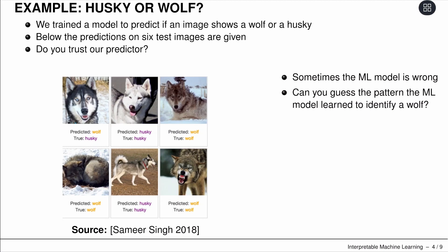Let's look at a concrete example: an image classifier predicting whether there's a wolf or a husky on an image. We see some examples — some correctly predicted as wolf, husky correctly predicted, and one case where the prediction was wolf but it was actually a husky. So sometimes the model is still wrong, which is very natural — it's unlikely we'll reach a state where everything is perfect, and from time to time the model makes errors.